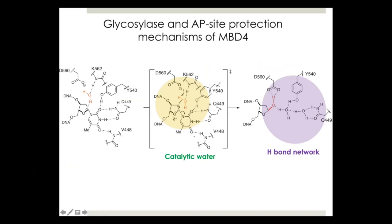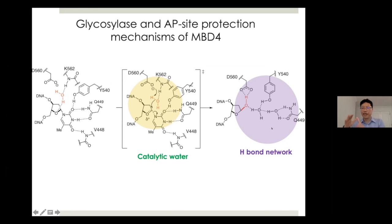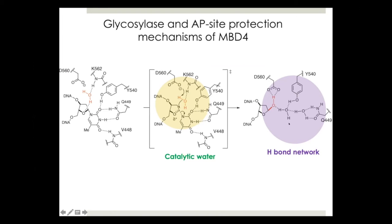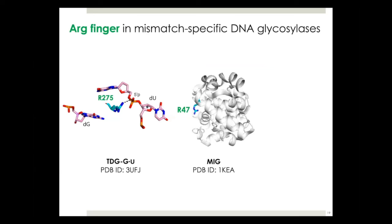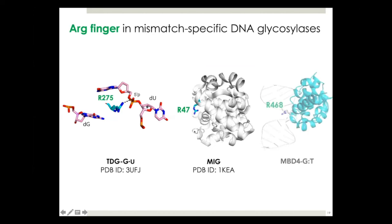Here is the updated proposed mechanism. We propose the catalytic water mechanism and the abasic site protection mechanism via hydrogen bond network. Lastly, I'll talk about the arginine finger commonly found in mismatch-specific DNA glycosylases. During this talk, you heard about arginine repeatedly. This arginine is commonly found in mismatch-specific DNA glycosylases such as TDG, MBiC, and MBD4.